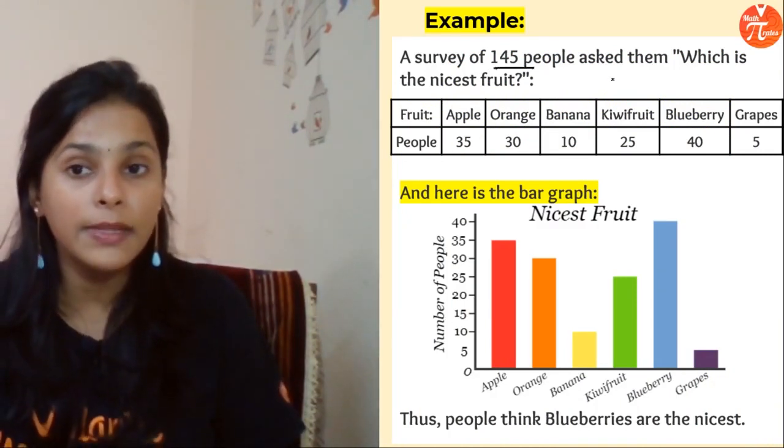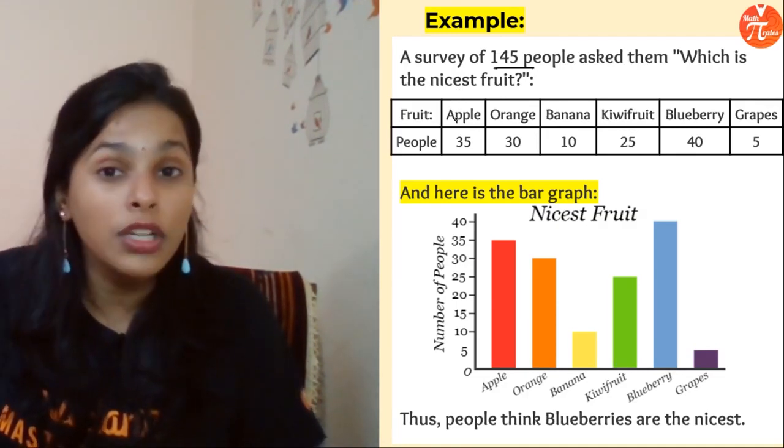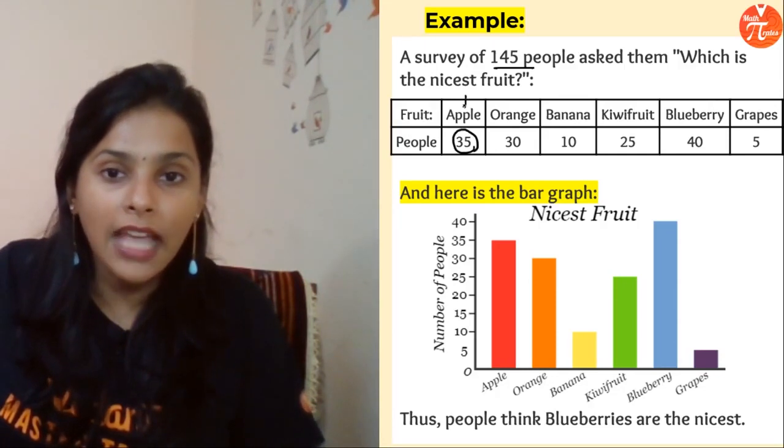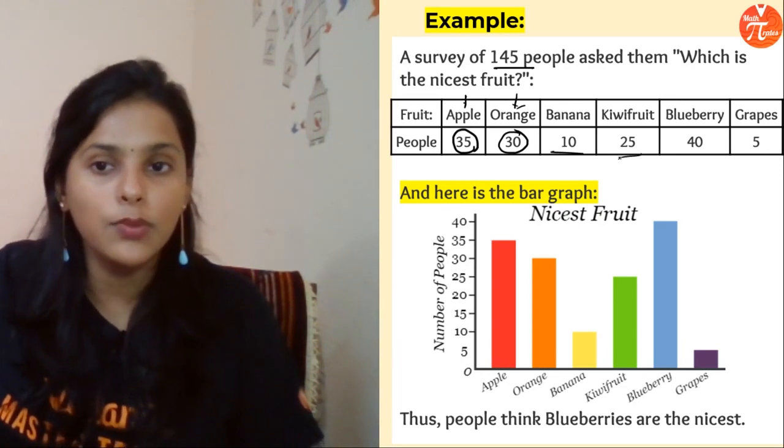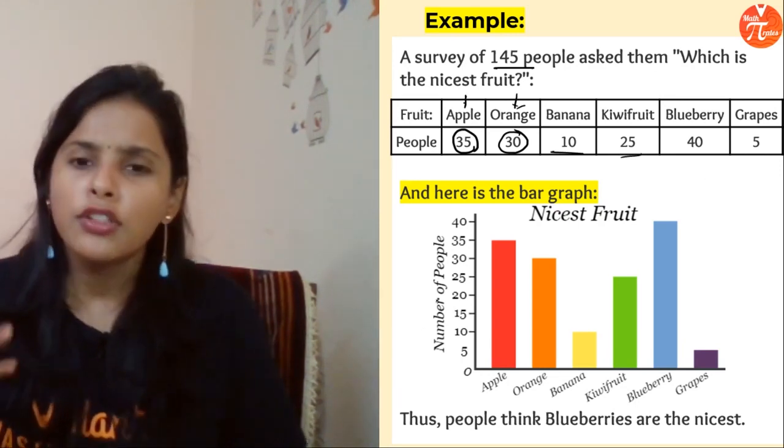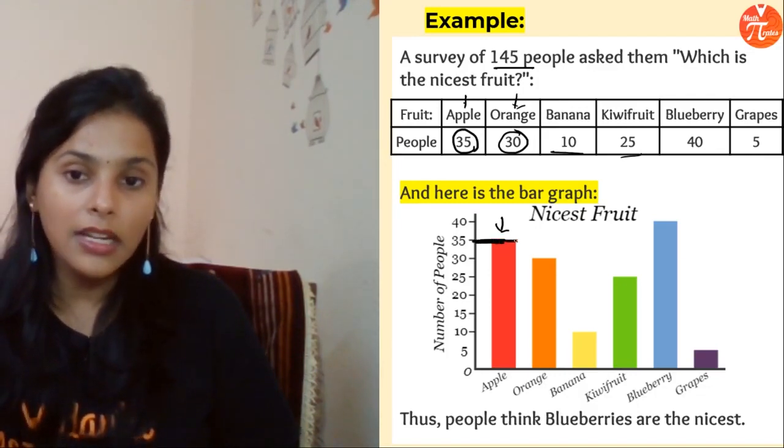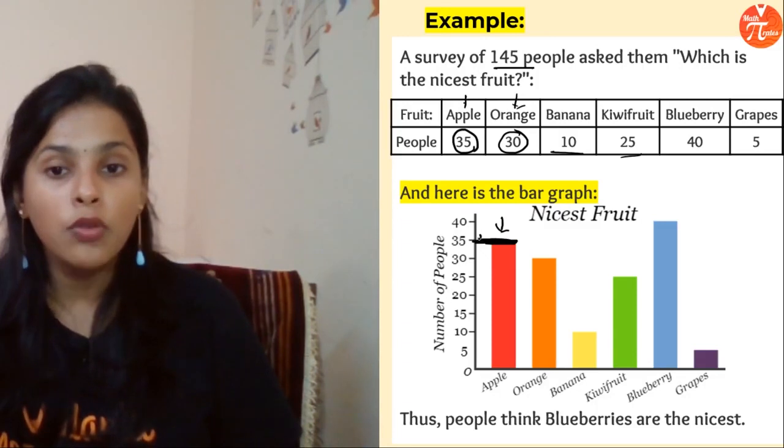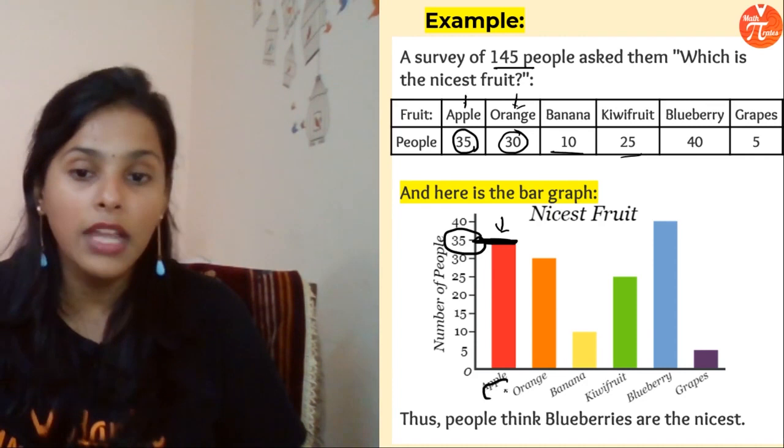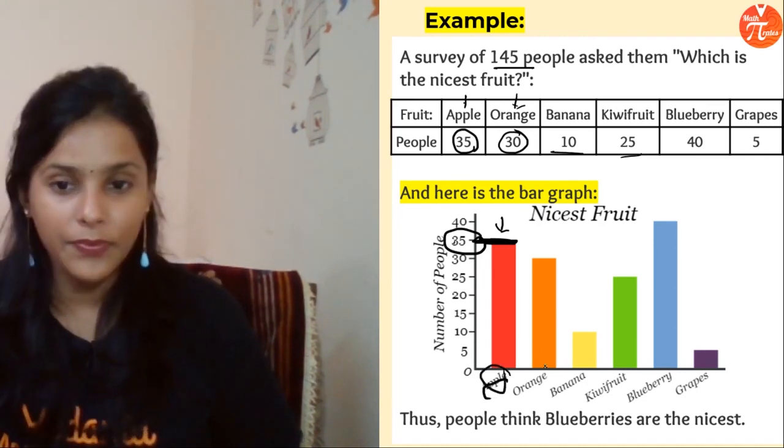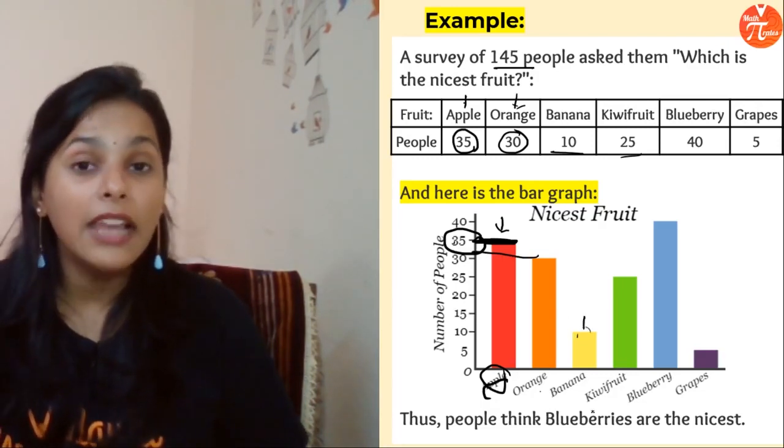For example, this is the example given to you where a survey of 145 people was taken asking which is the nicest fruit according to them. 35 people said they like apple, 30 people liked oranges, 10 banana, 25 kiwi fruit, and so on. Can you see these rectangular bars represent the data? The height of this rectangular bar represents the likability of fruit. Apple is liked by 35, orange by 30 people, banana by 10 people, and so on.